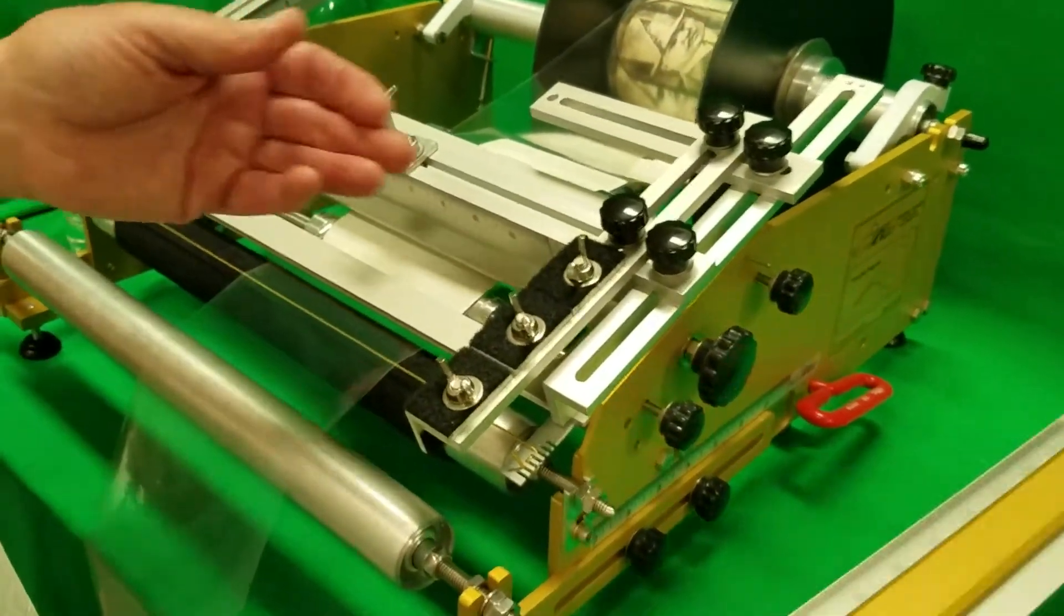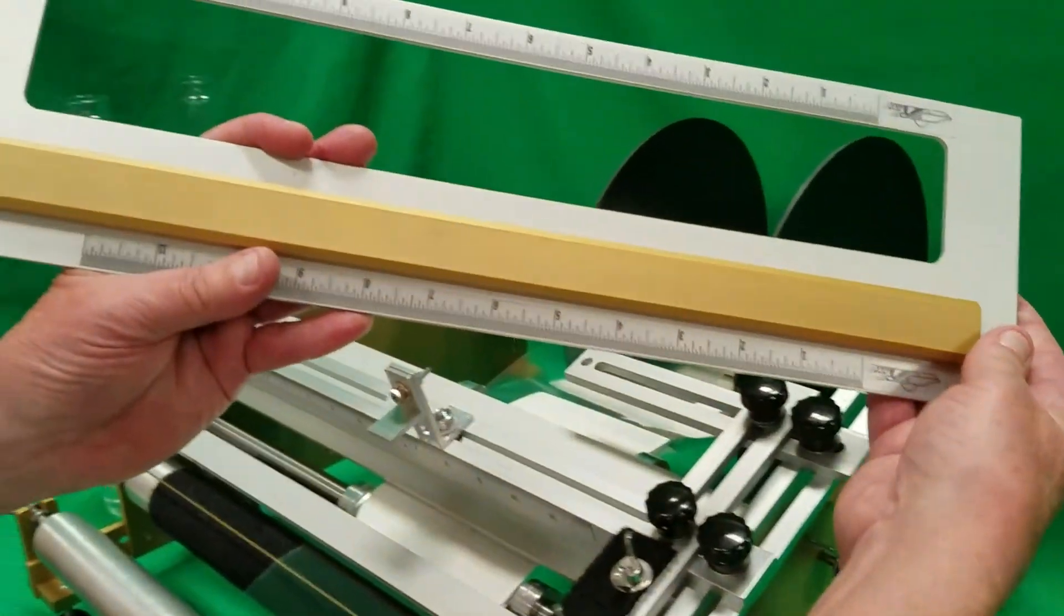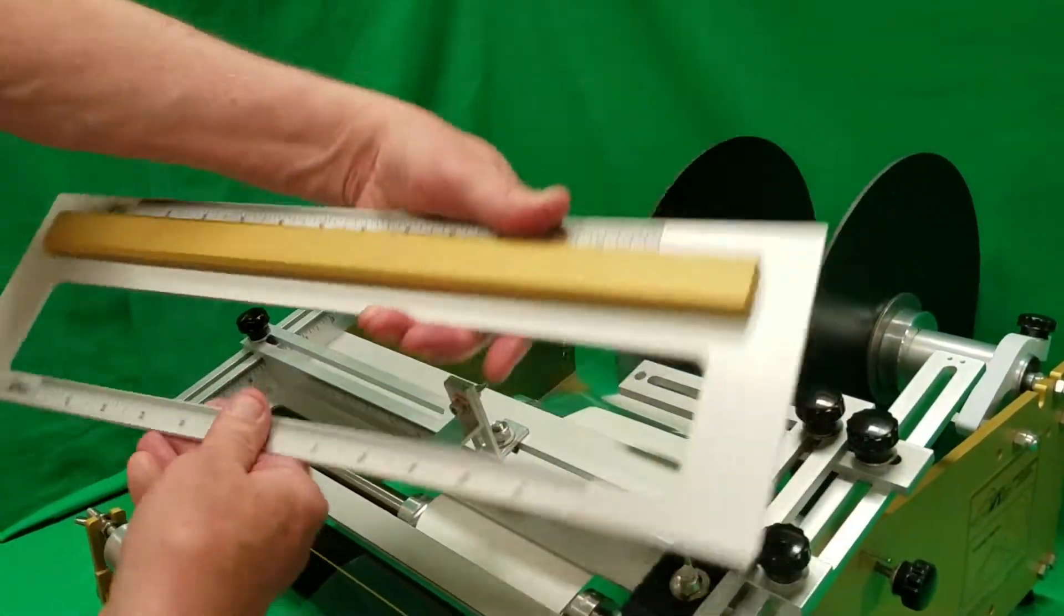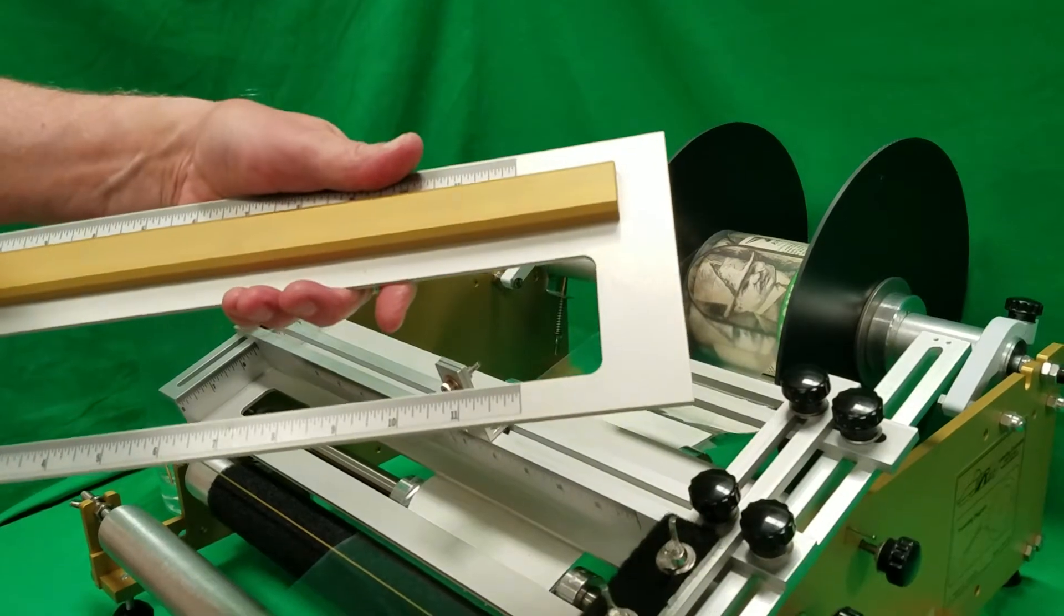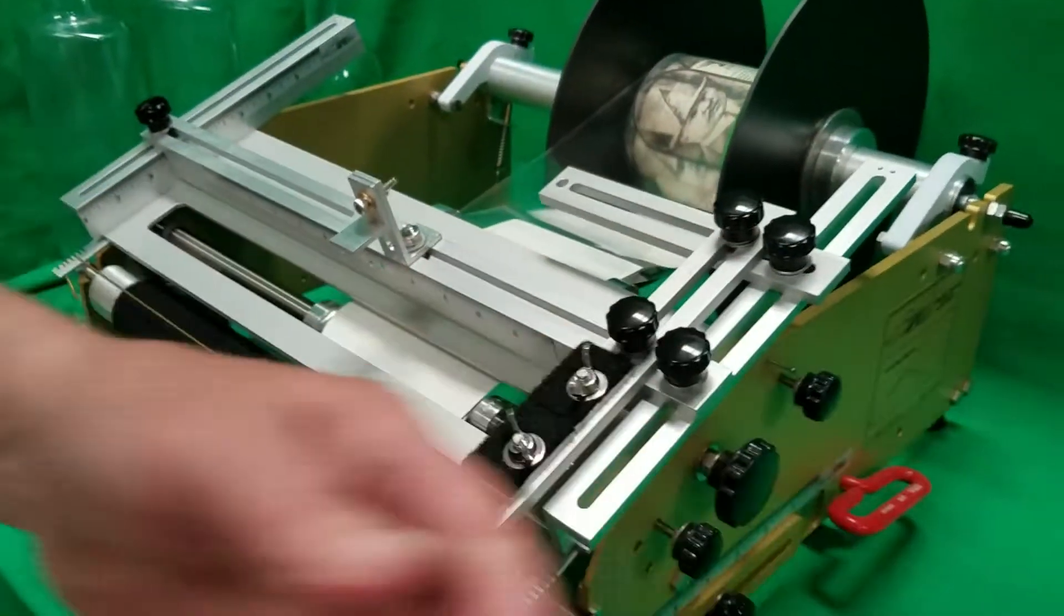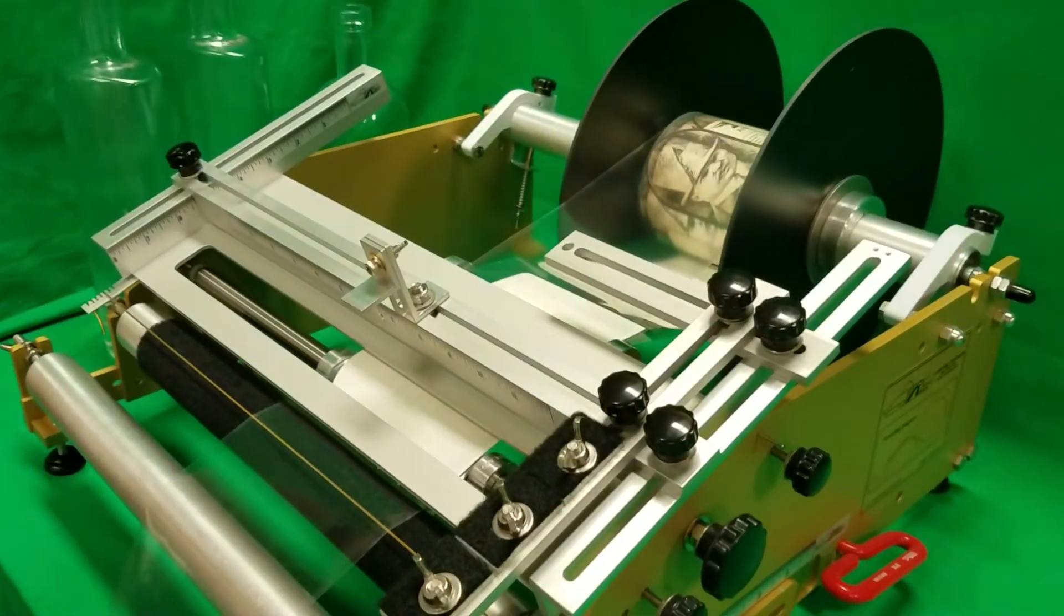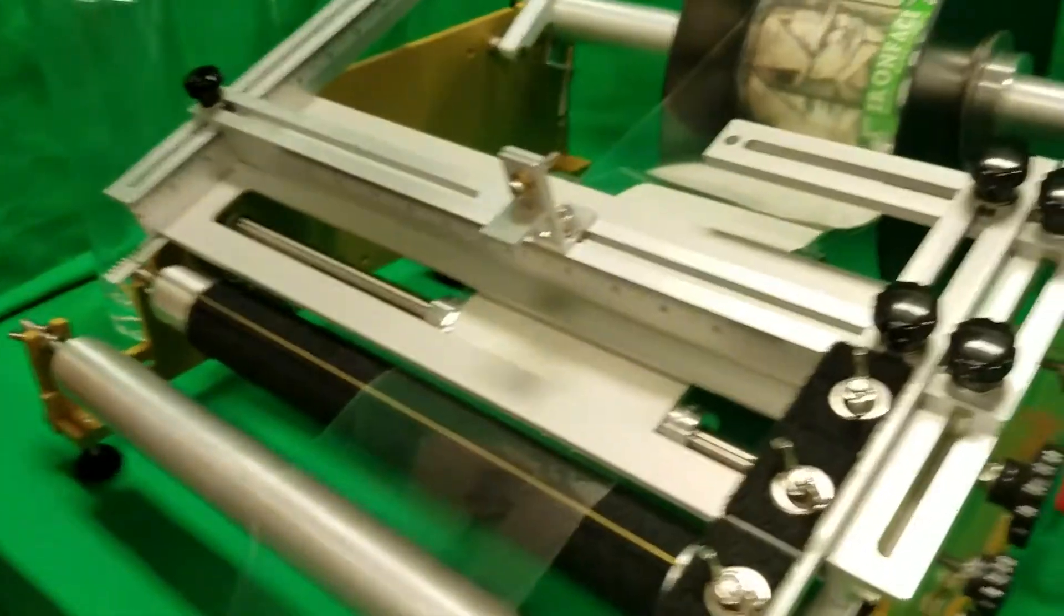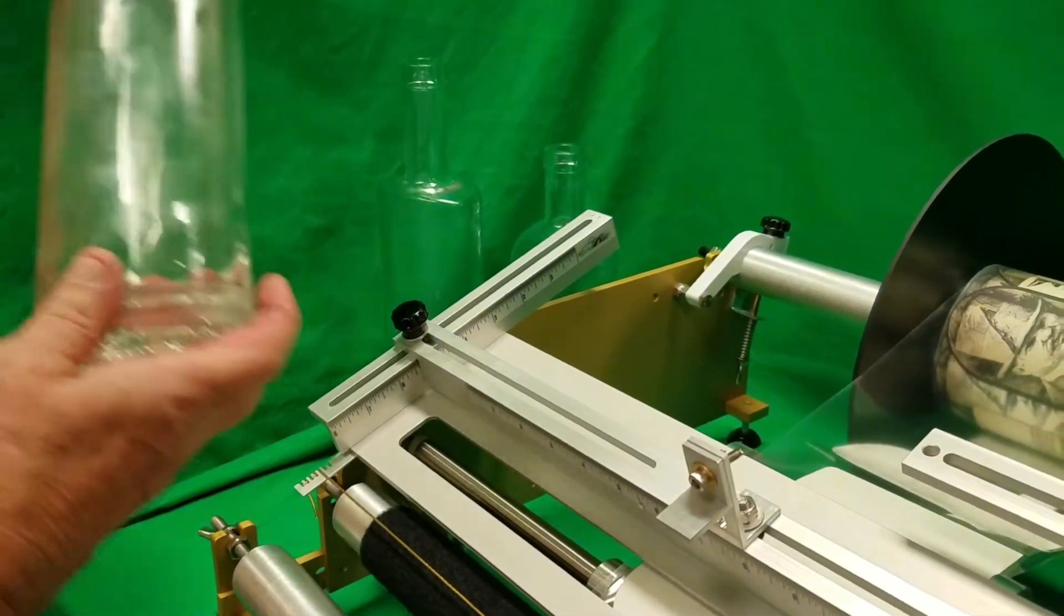The spring plate can be removed and this plate can be put in the machine to do straight round containers or tapered round containers. So this machine is extremely versatile.